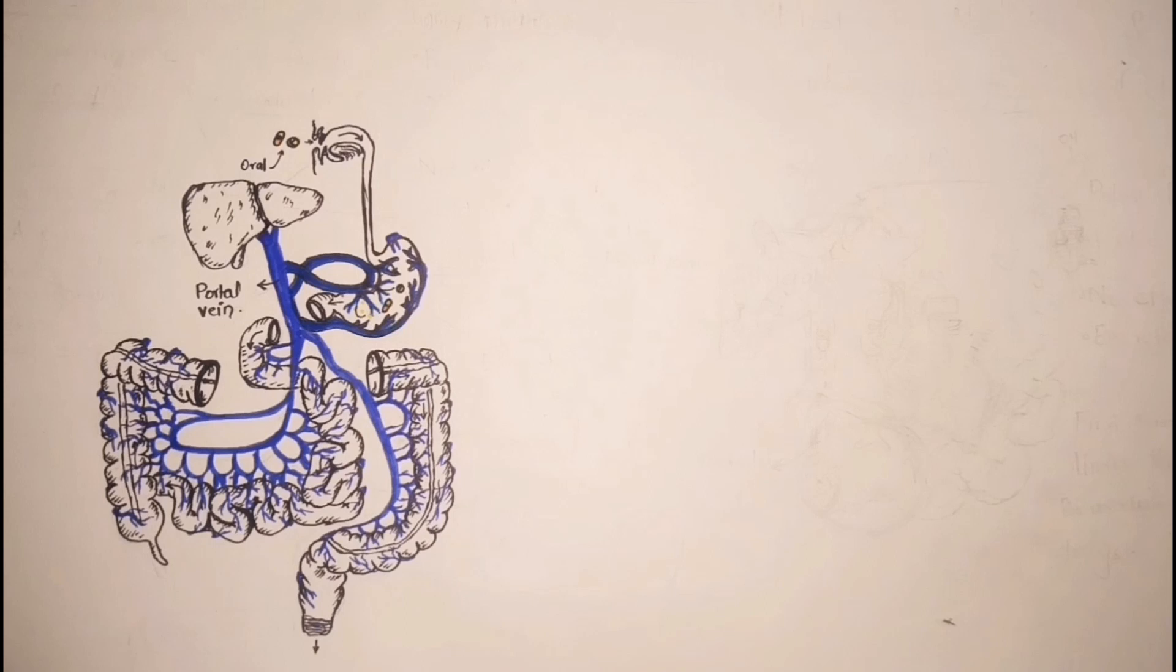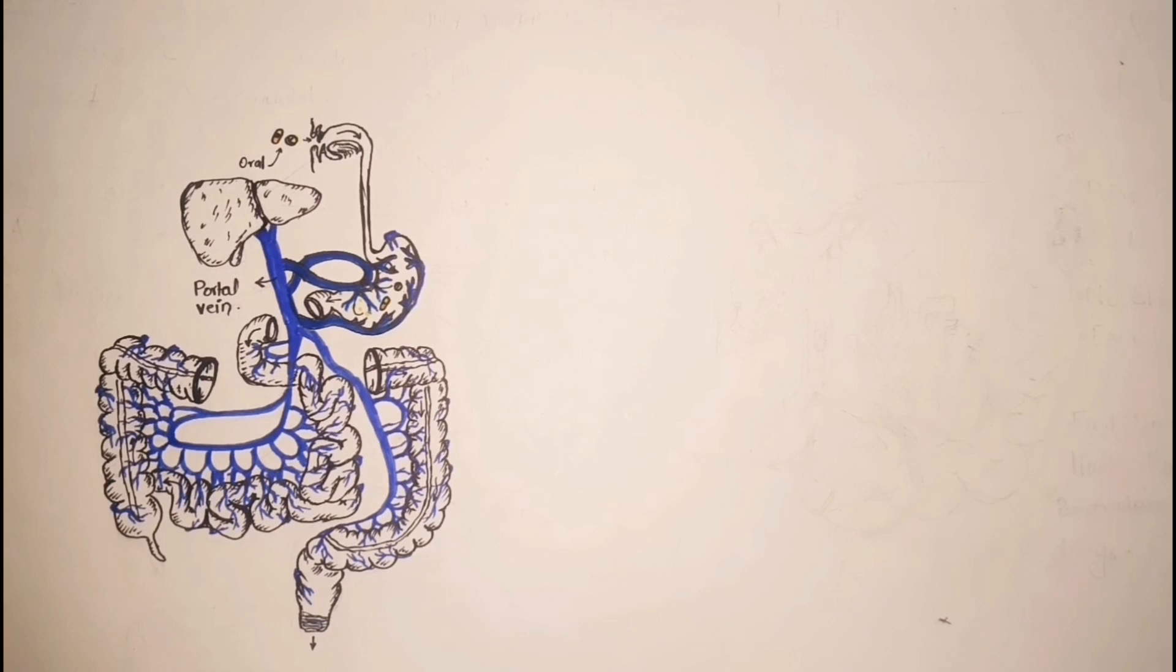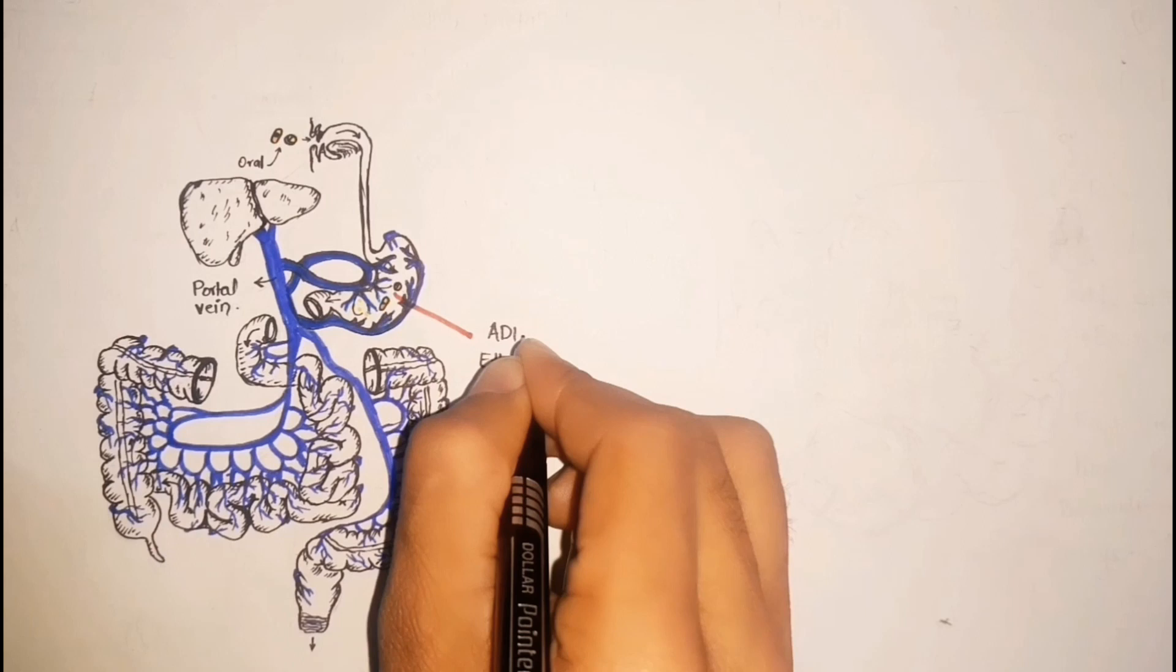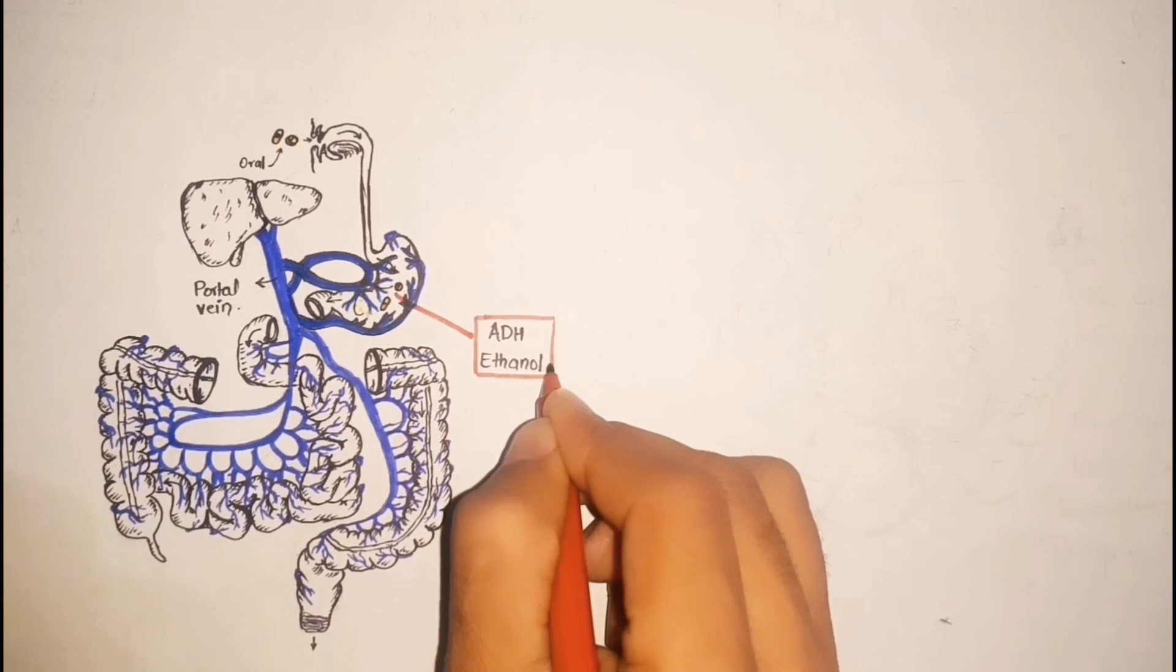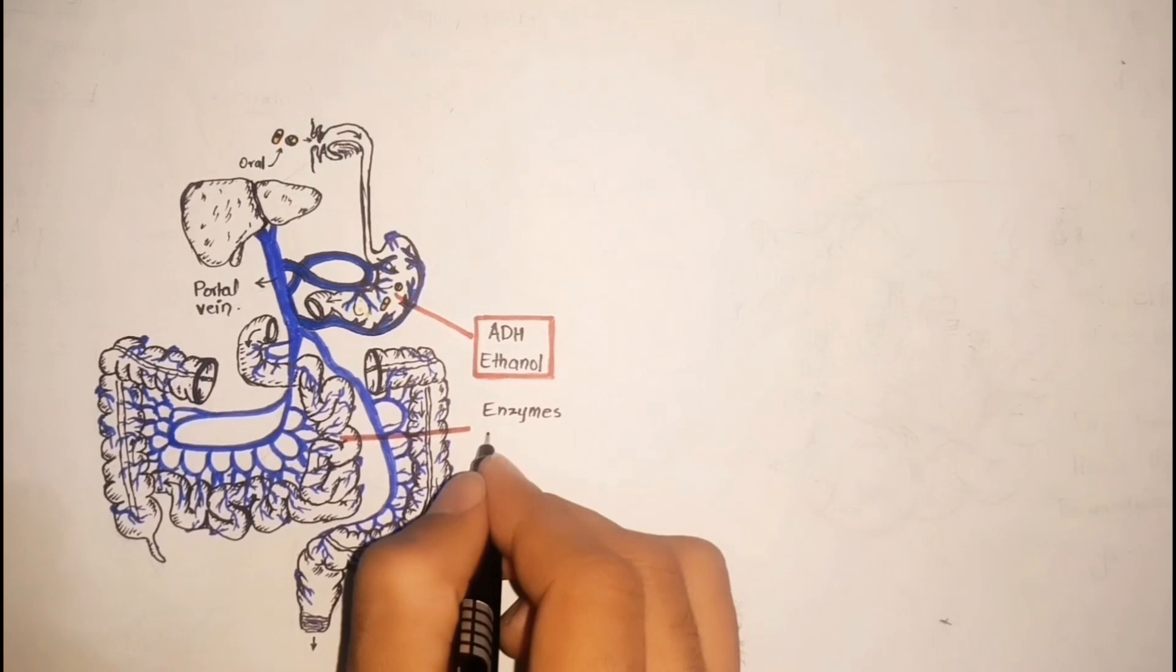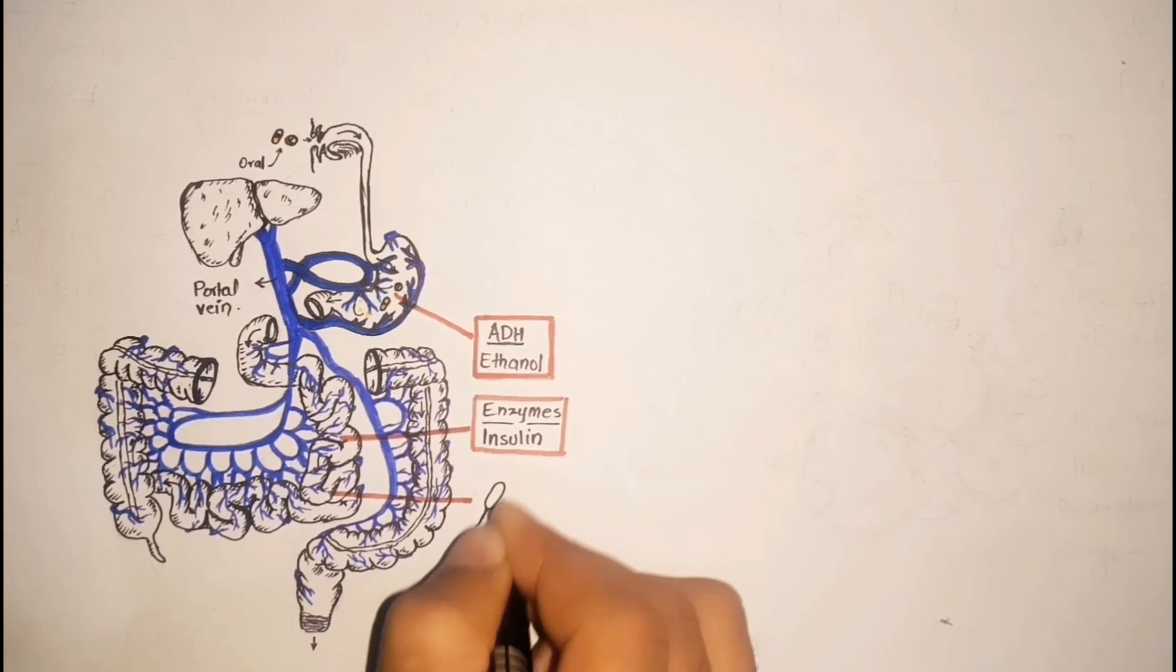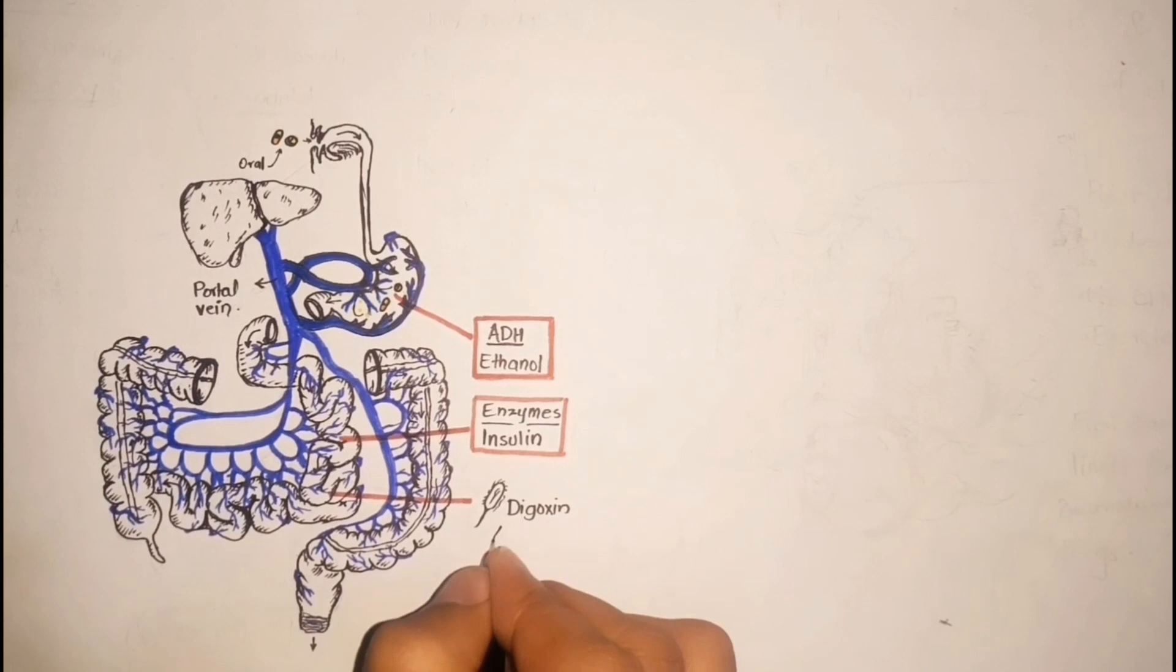Now if a drug is taken orally and starts its journey through the GI tract, some substances are metabolized in the stomach, for example ethanol which is metabolized by alcohol dehydrogenase. Some drugs are metabolized by the digestive enzymes, for example insulin, and that's why it is administered subcutaneously. Furthermore, some drugs are metabolized by the intestinal microbiota, for example digoxin and aspirin.